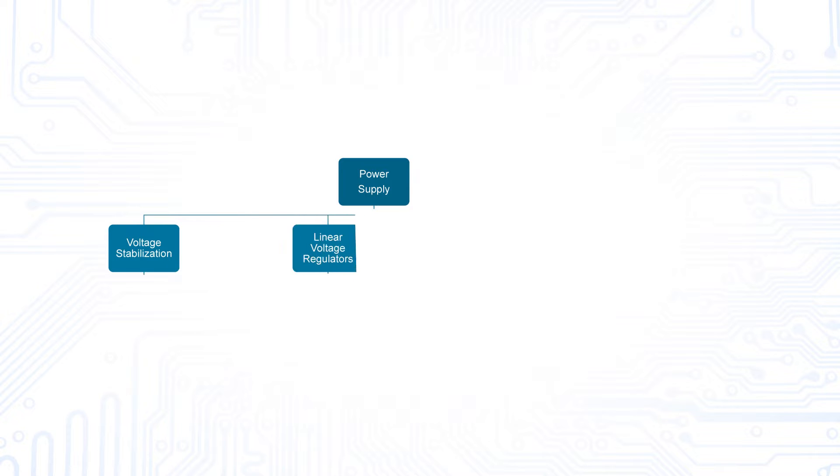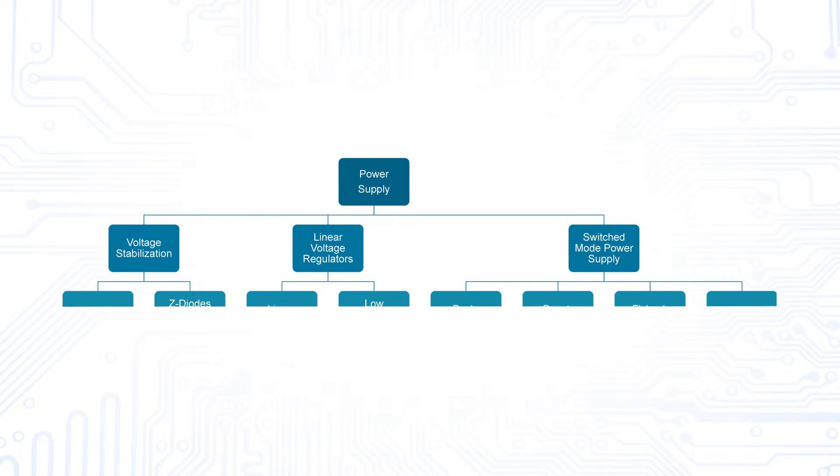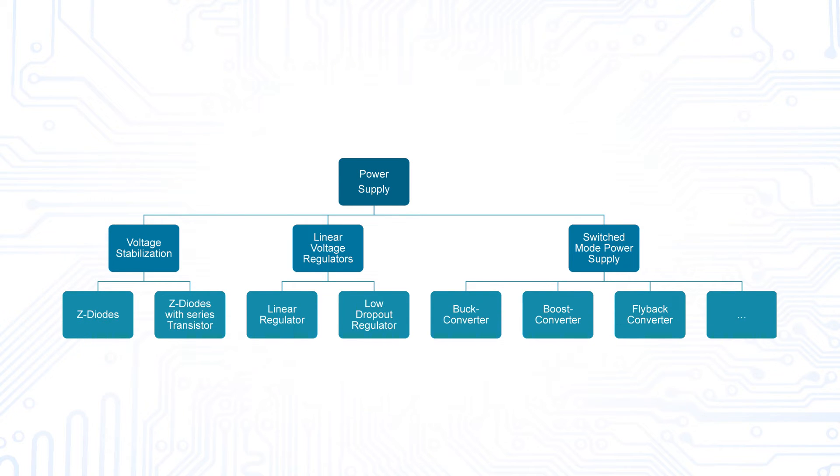Voltage stabilization circuits, linear voltage regulators and switched mode power supplies. All of them have subtypes as well with their individual advantages and disadvantages.